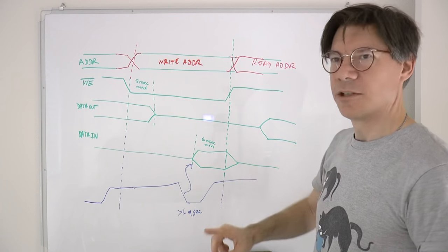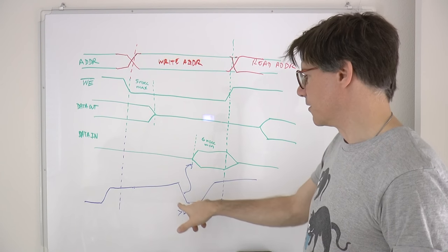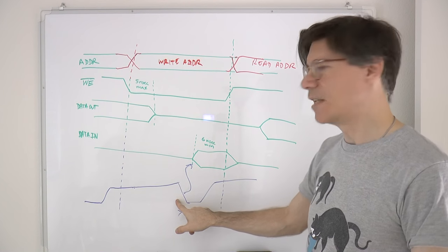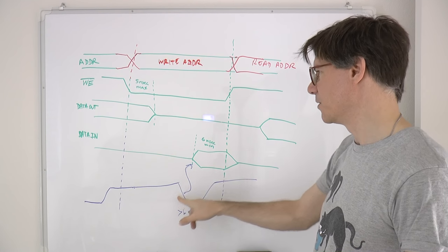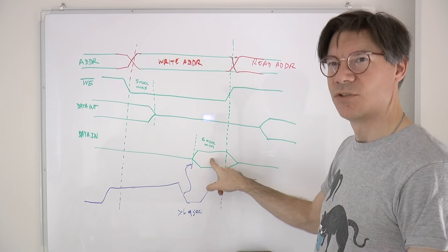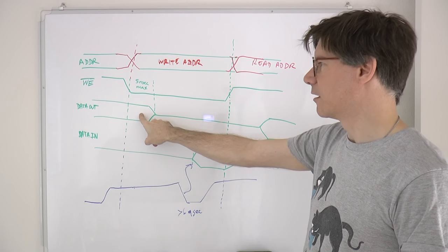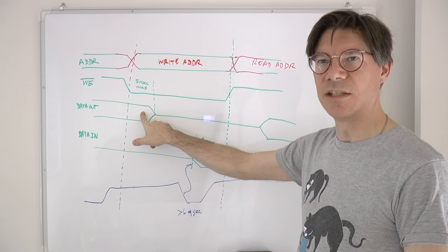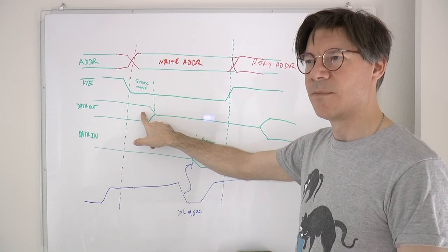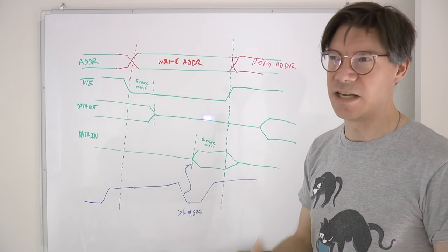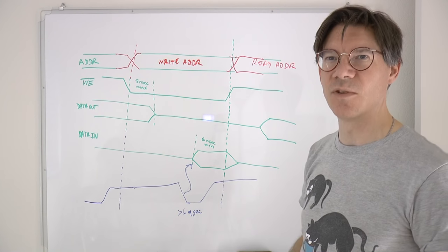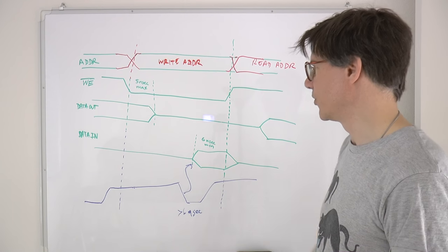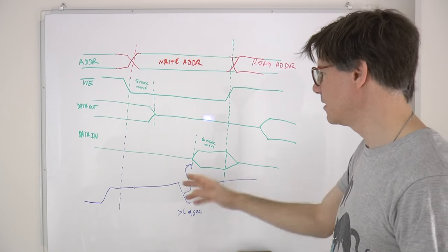It is a very good thing that the other half cycle is greater than 6 nanoseconds, because if we were to present data to the chip during the time when the SRAM is still in transmit mode, then we would be transmitting and the SRAM chip would be transmitting, and that's no fun for anyone. So this seems to work.